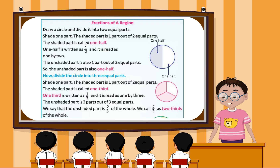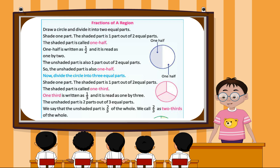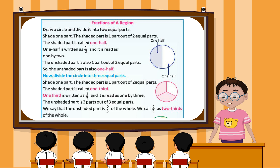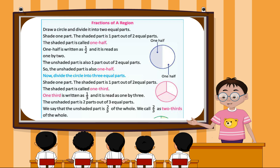Fractions of a region. Draw a circle and divide it into two equal parts. Shade 1 part. The shaded part is 1 part out of two equal parts, called 1 half. 1 half is written as 1 by 2 and read as 1 by 2. The unshaded part is also 1 part of two equal parts, so the unshaded part is also 1 half.